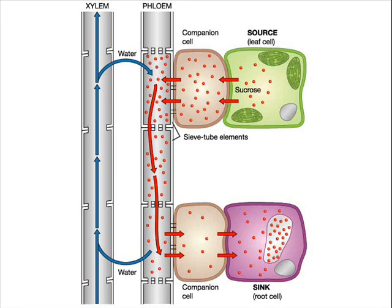Translocation is an energy-requiring process that happens in the phloem. It moves substances from sources to sinks. The source of a substance is where it is made, so it is at a higher concentration there. The sink is the area where it is used up, so it is at a lower concentration there.